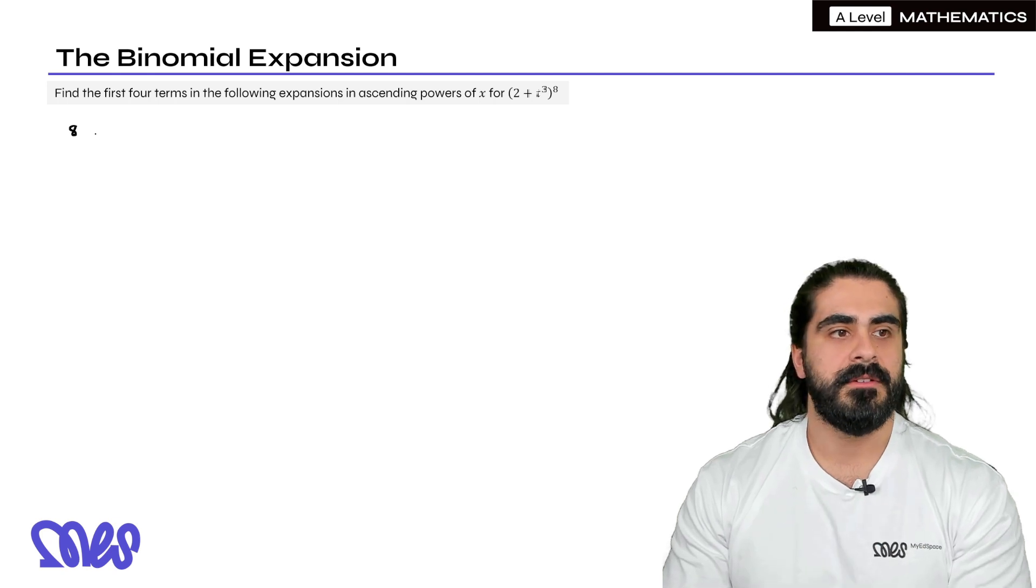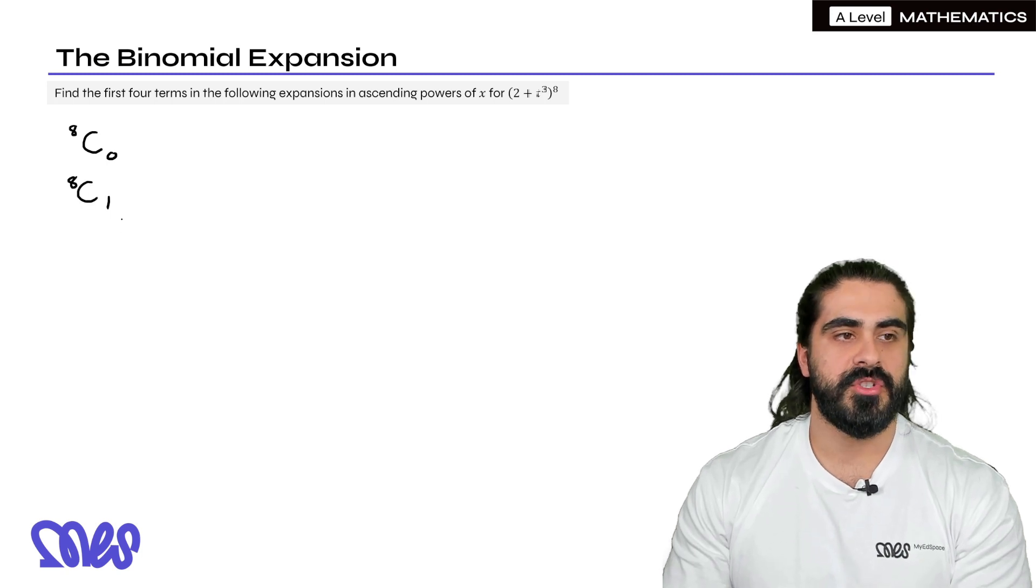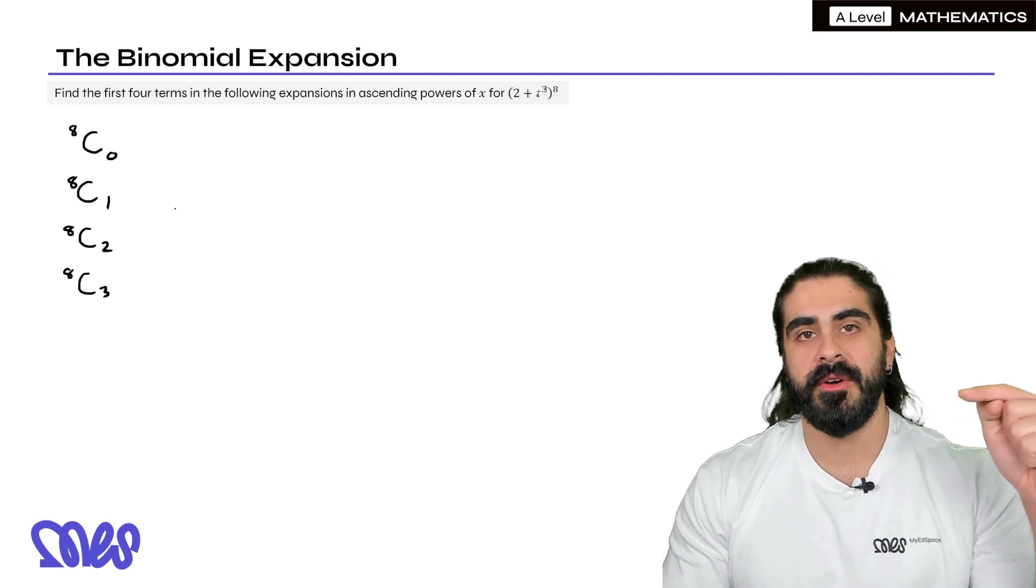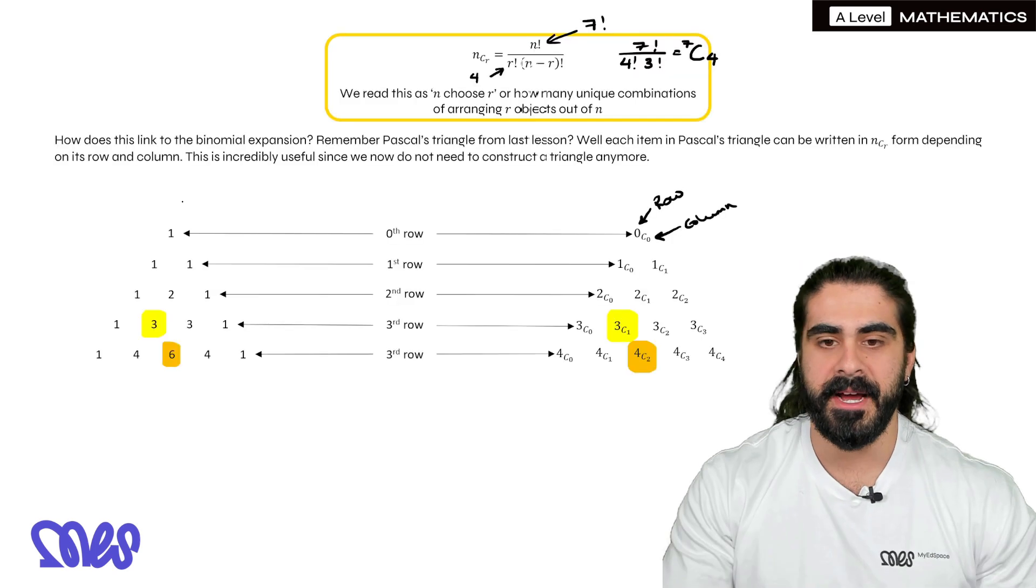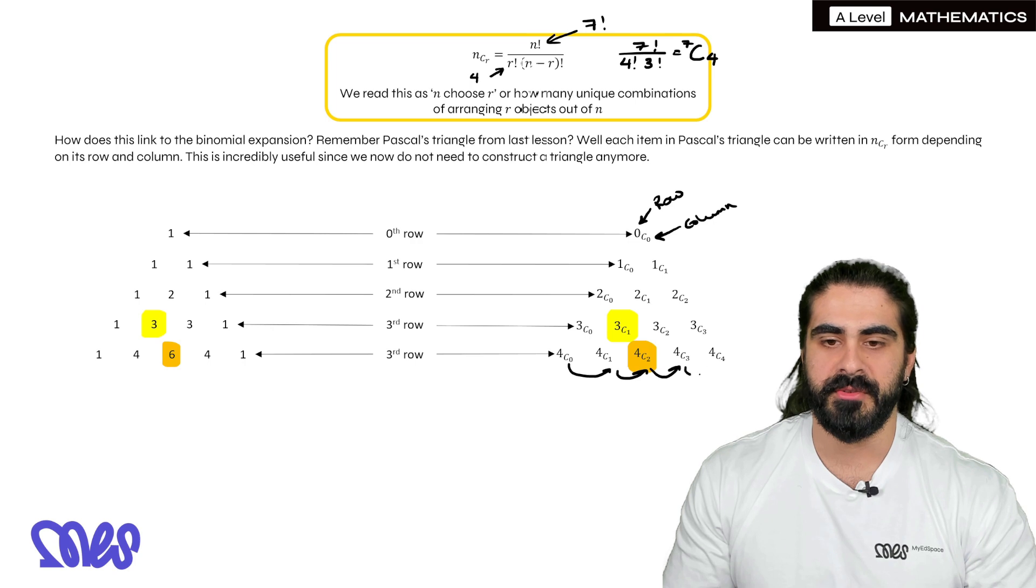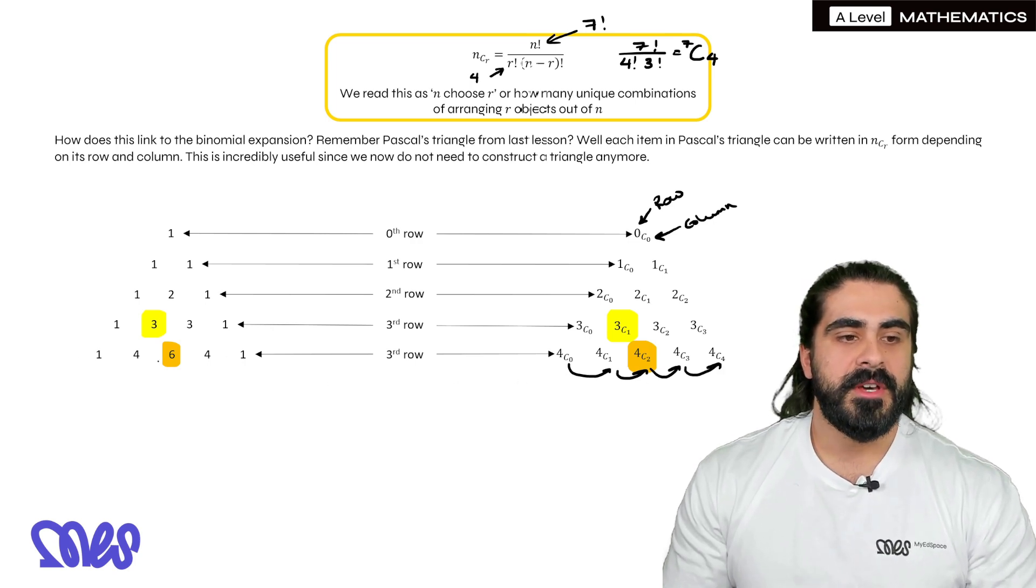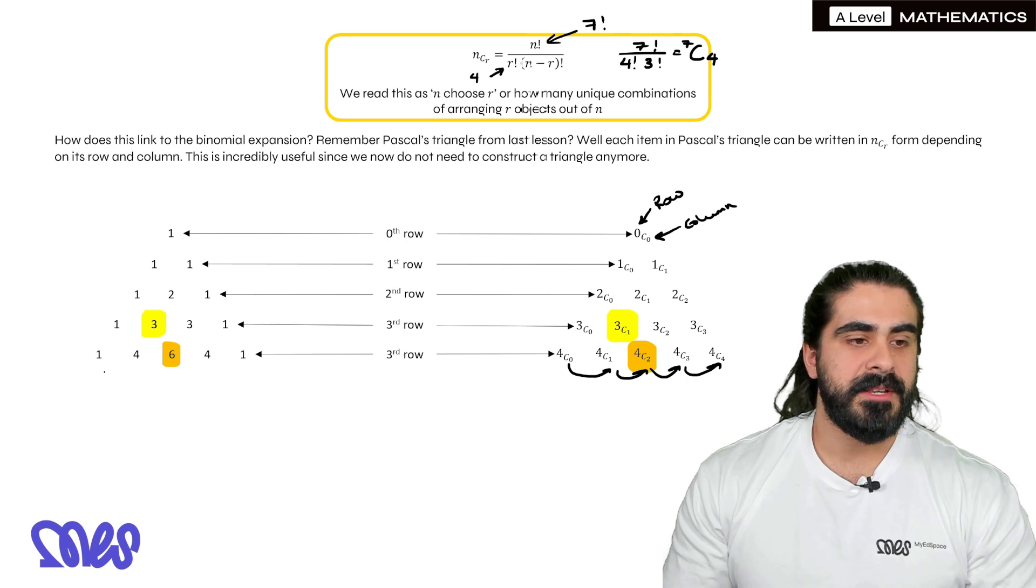Remember, the first choosing notation starts with zero. So we have the eighth row, so they all will start with eight. Choose the zeroth position, that'll be one of the coefficients. Then we would have eight choose one. This is me going along the eighth row. If we go back, if you see as we go along, it's choose zero, choose one, choose two, choose three, choose four. And also remember with Pascal's triangle, there's symmetry, right? One, one, four, four, and then the six is in the middle.